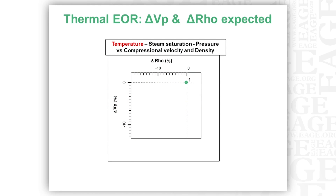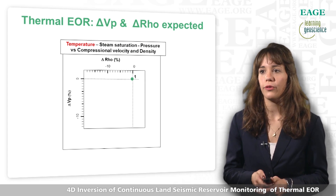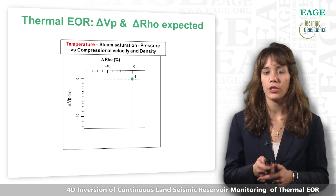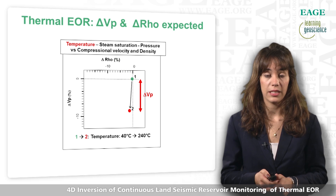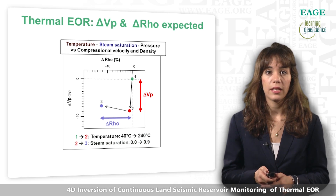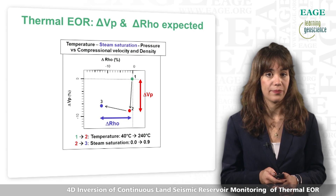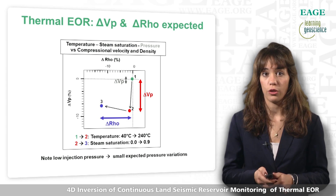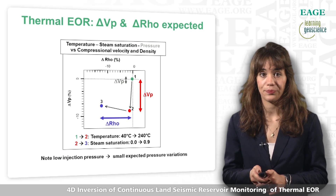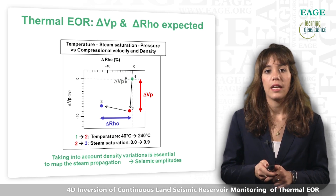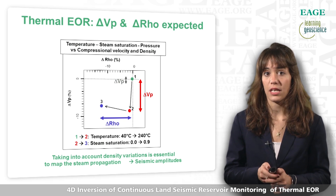On this diagram, the x-axis is the variation of density and the y-axis is the variation of P velocity. The green point represents an initial state in the reservoir. Going from state 1 to state 2, the temperature has been increased about 200 degrees — it clearly decreased the compressional velocity. Going from state 2 to state 3, the steam saturation has been increased — it decreased the density but has only a small impact on P velocity. Regarding pressure, the steam injection pressure in Schoonebeek was very low, so the pressure impact on the reservoir is expected to be very small. To summarize, it is essential to take into account the density variation to map the steam chest propagation, so we need to look at seismic amplitude variation.